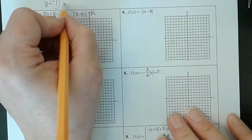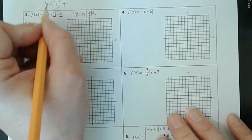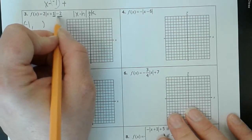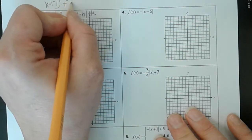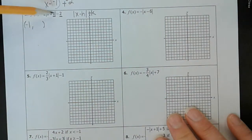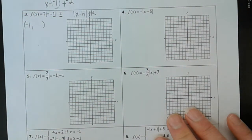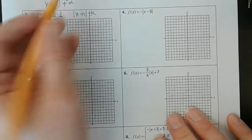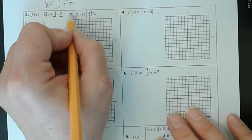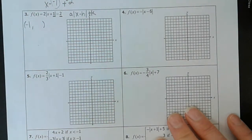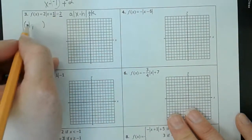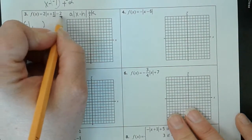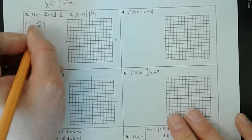Plus k — to get negative 2, we have to add negative 2, because this is the same as plus negative 2. So basically you have to write it in this exact form and then figure out what values fall into that. So our h is negative 1, and our k is negative 2.